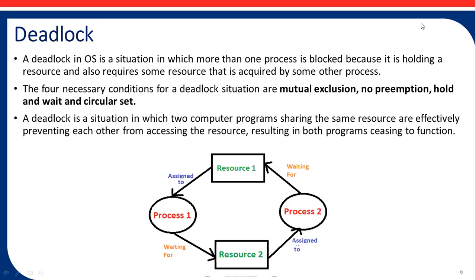In operating systems, deadlock is the most important concept. A deadlock is a situation in which more than one process is blocked because it is holding a resource and also requires some resource that has been acquired by some other process. The four necessary conditions for a deadlock situation are: mutual exclusion, no preemption, hold and wait, and circular wait. A deadlock is a situation in which two computer programs sharing the same resources are effectively preventing each other from accessing those resources, resulting in both programs ceasing to function.